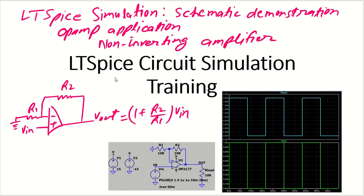Namaskar, my dear friends. Let's talk about op-amp applications in LTSpice simulations. In this session, we will simulate a non-inverting amplifier circuit. You already know the non-inverting amplifier circuit configuration — we have a feedback resistor R2, resistor R1, and the input voltage supplied to the non-inverting (positive) input. To find the output voltage, from the design equation, V_output = (1 + R2/R1) × V_in.